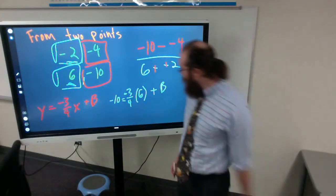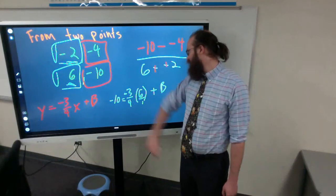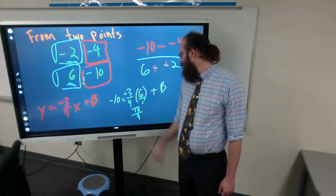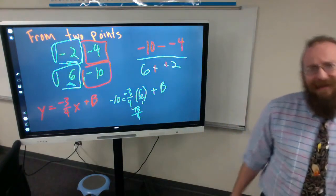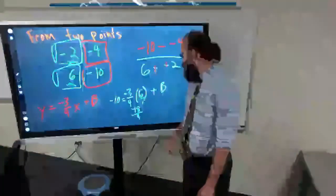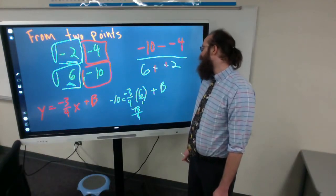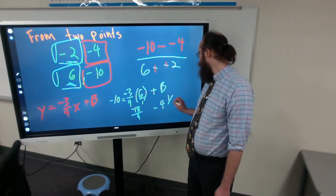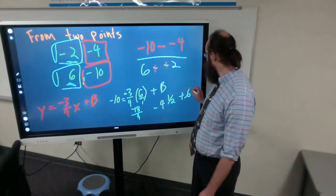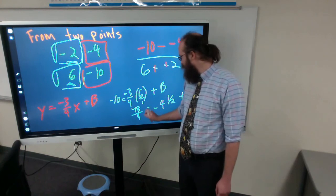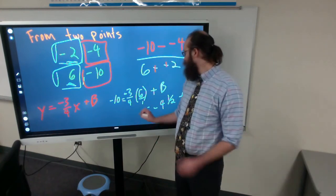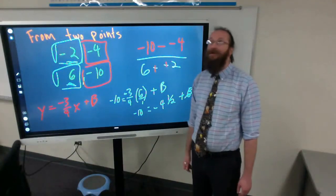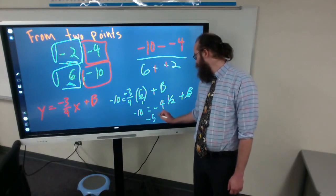We take six times negative three fourths. We'll write six into a fraction, go straight across. Six times negative three is eighteen, negative eighteen, four times one is four. So that reduces down to negative four and a half. So we have negative four and a half plus some number b equals negative ten. Finally we would add four and a half to both sides and we get negative five and a half equals b.